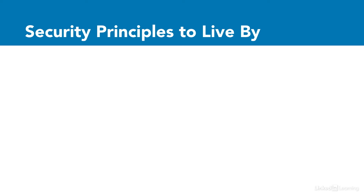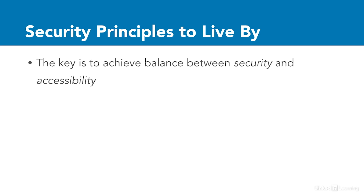Some great security principles apply to cloud solutions as well as on-premises deployments. The key is always to achieve a balance between security and accessibility. A network that is truly secure is completely detached from all network access, disconnected from the Internet, and physically disconnected from outside attacks — however, it's not accessible. A resource that is easily accessible may not be the most secure. The balance is providing access to data and resources while maintaining security without too many hurdles that hamper accessibility.